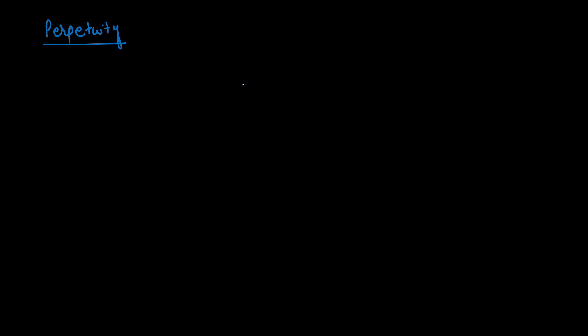Let's start off with the perpetuity. We already know perpetuities give you the same amount of cash flow every year forever. Let that amount be C. So in year one you'll get C, in year two you'll get C again, in year three you'll get C again, and this will go on forever. Let's assume the discount rate to be capital R.